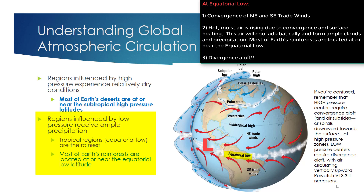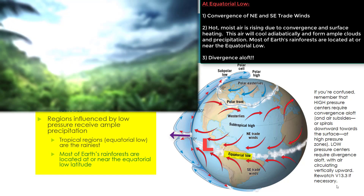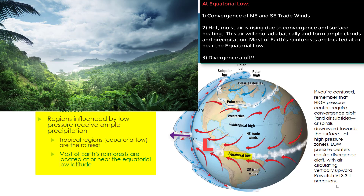With low-pressure zones, we're talking about converging winds. The northeast trade winds and the southeast trade winds are converging towards the equator, because air wants to flow towards the lowest pressure region it can — which in this region is at the equatorial low. Low-pressure regions also see air rising. Due to the warm, moist air near the equator and converging winds causing air to rise, we will see a lot of cloud formation near the equatorial low-pressure zone. That's why most of our planet's rainforests occur near the equator — there will be ample rainfall in this region.